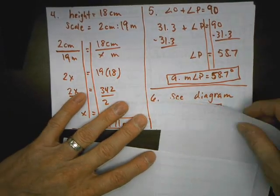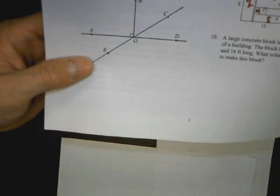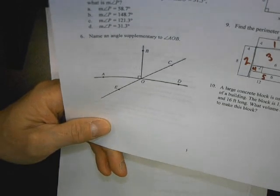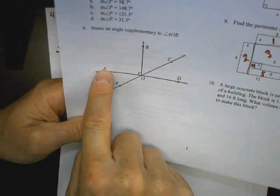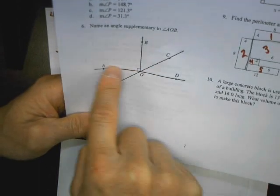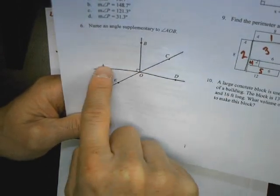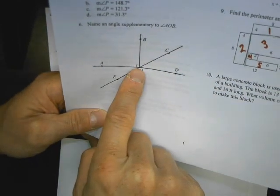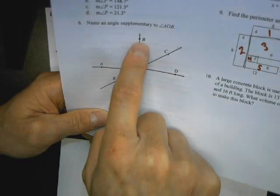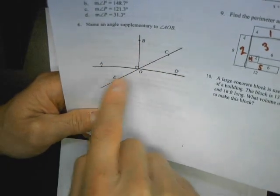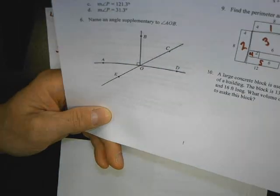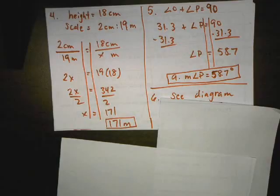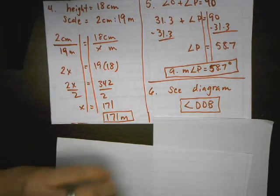Number six, we're going to take a look at the diagram for number six. They give us a diagram. They want us to find a supplementary angle to angle AOB. Well, angle A, I start with A, O, then I go to O and B is right there. That's 90 degrees. So I need to make a straight line with that if it's supplementary. So the only angle that makes a straight line is this one right here. These two together make a straight line. So the angle BOD or DOB, that's the two ways you can say it. Just make sure the O is in the middle. There's a correct answer.